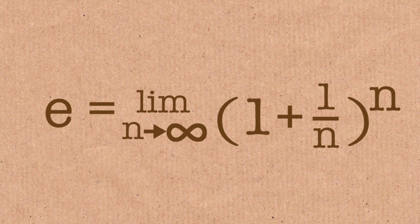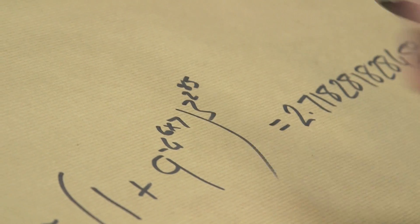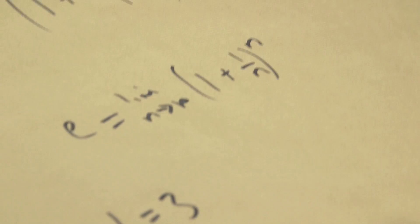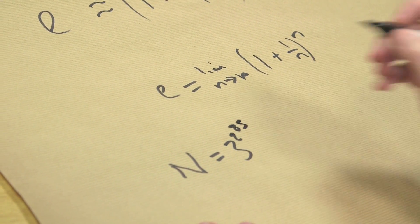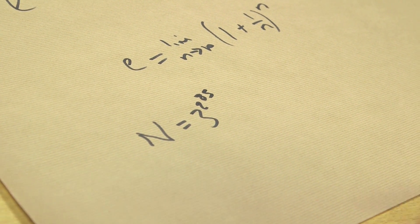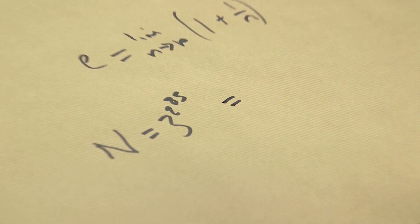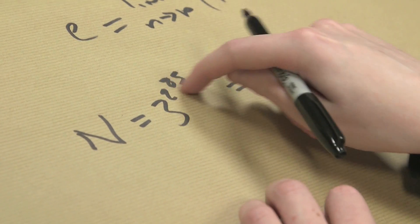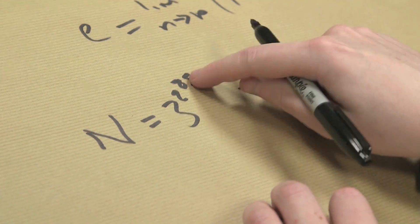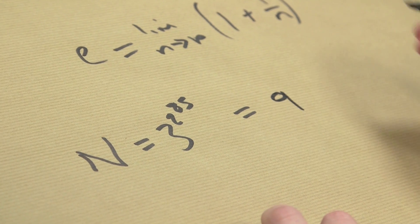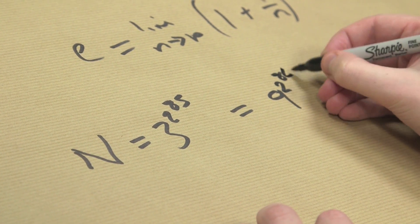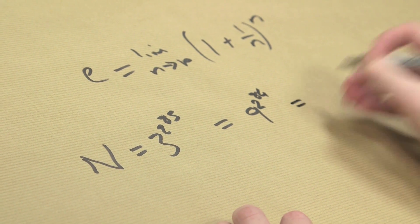He did something clever. He found a number — I'll call it capital N — which is three to the power of two to the power of 85. Then he manipulated it using properties of powers. He took one of those 85s and used it to square the three, so it becomes 9 to the power of 2 to the power of 84.